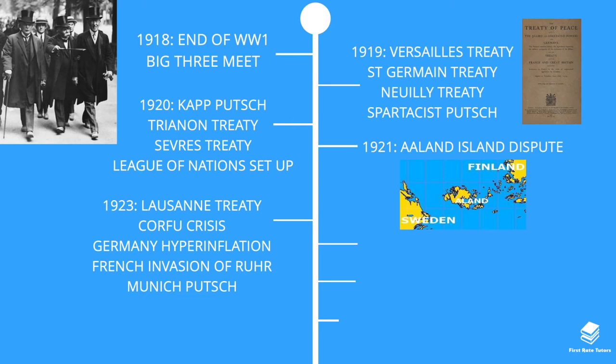In 1923 several events occurred. First, the Lausanne Treaty was the final peace treaty, signed after the Ottoman Empire faced an internal revolt and the new Turkish government needed to sign a new treaty. There was also the Corfu Crisis, where Mussolini, the leader of Italy, invaded and forced Greece to pay reparations after an Italian general was shot and killed. This was actually one of the early failings of the League of Nations, as they were unable to get Italy to withdraw peacefully.